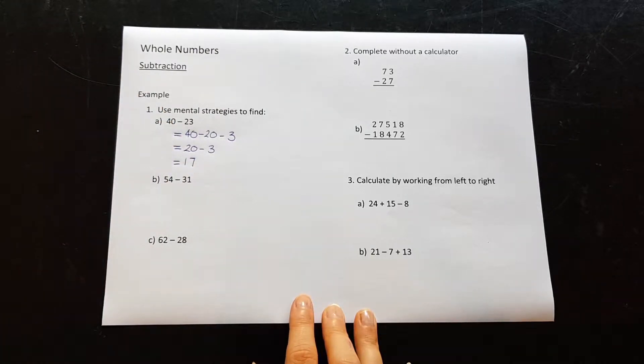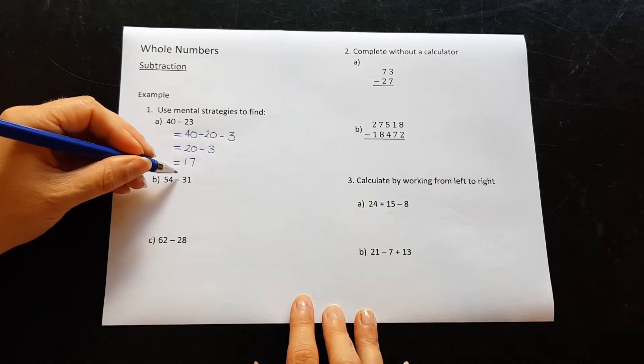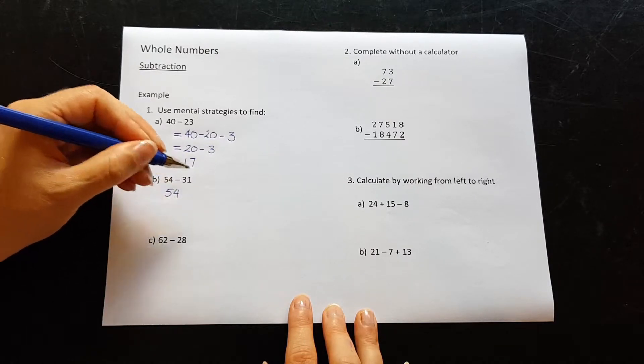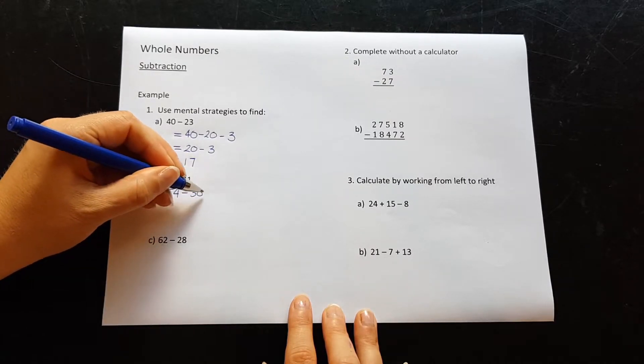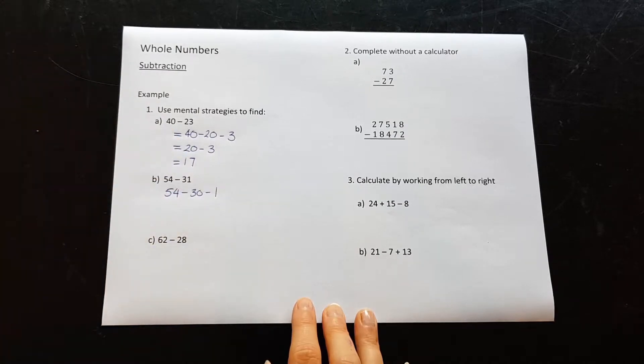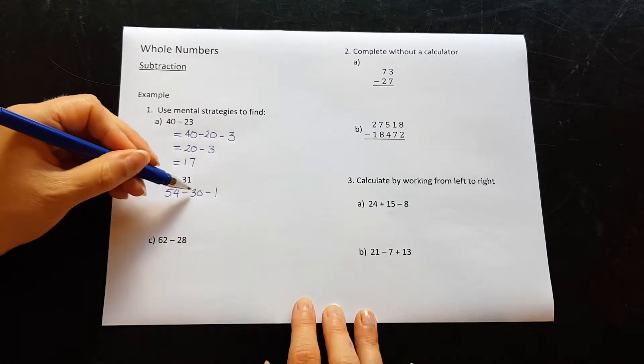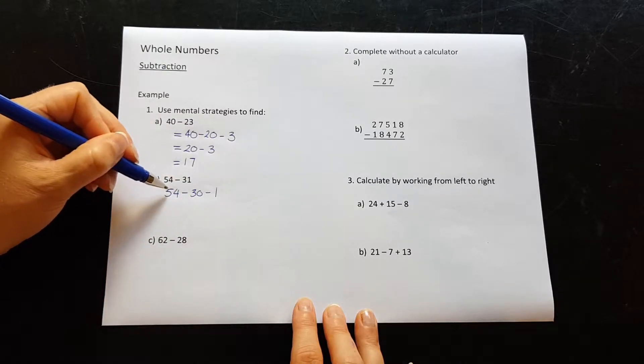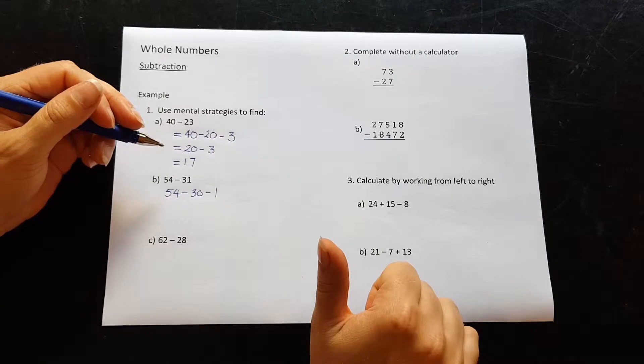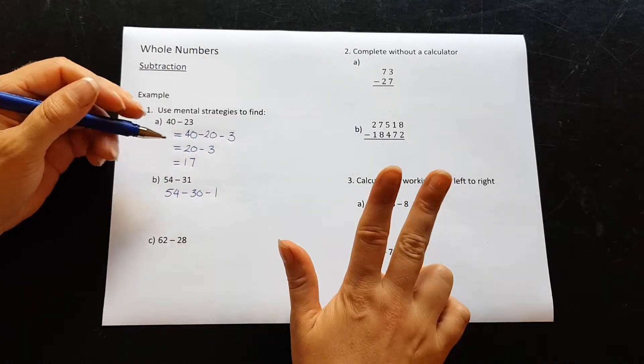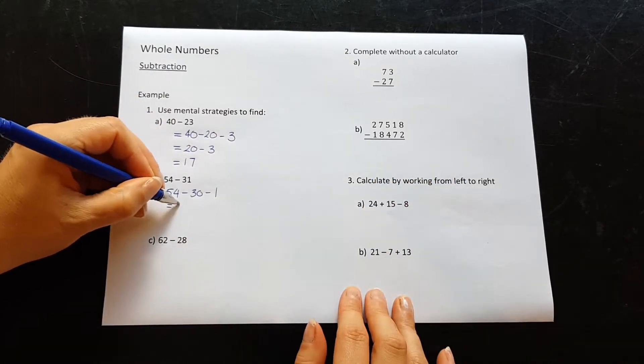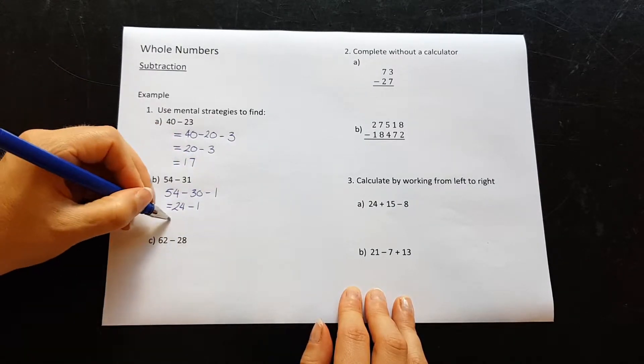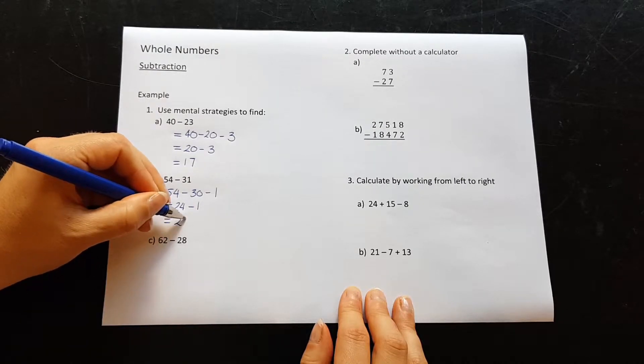Let's try that again for B. 54 minus 31. I'm going to change that to be 54 minus 30 minus 1. I can take the 30, which is 3 tens, off the 50. Counting backwards by 10 you get 24. And I still have to take off my 1. So 24 take away 1 is 23.